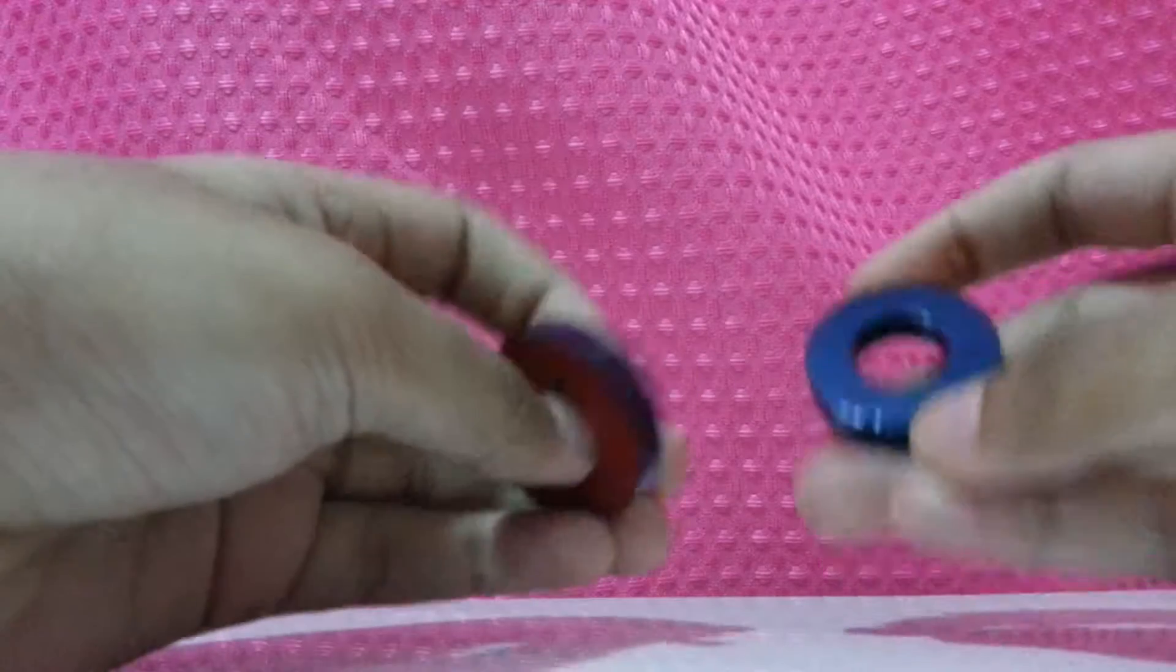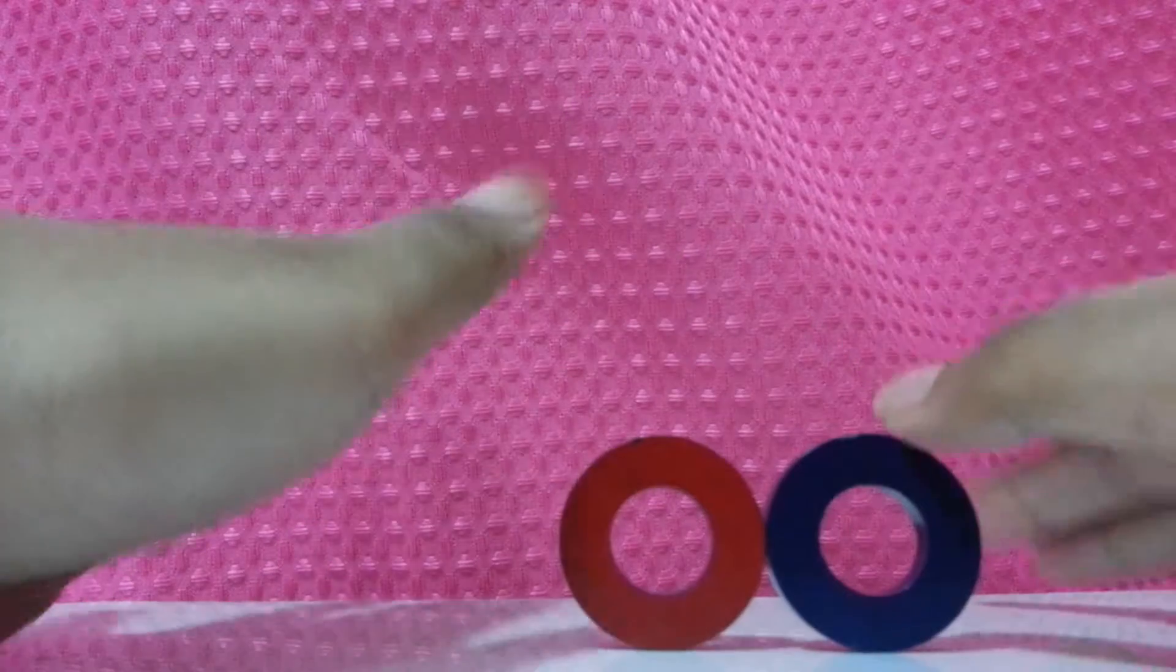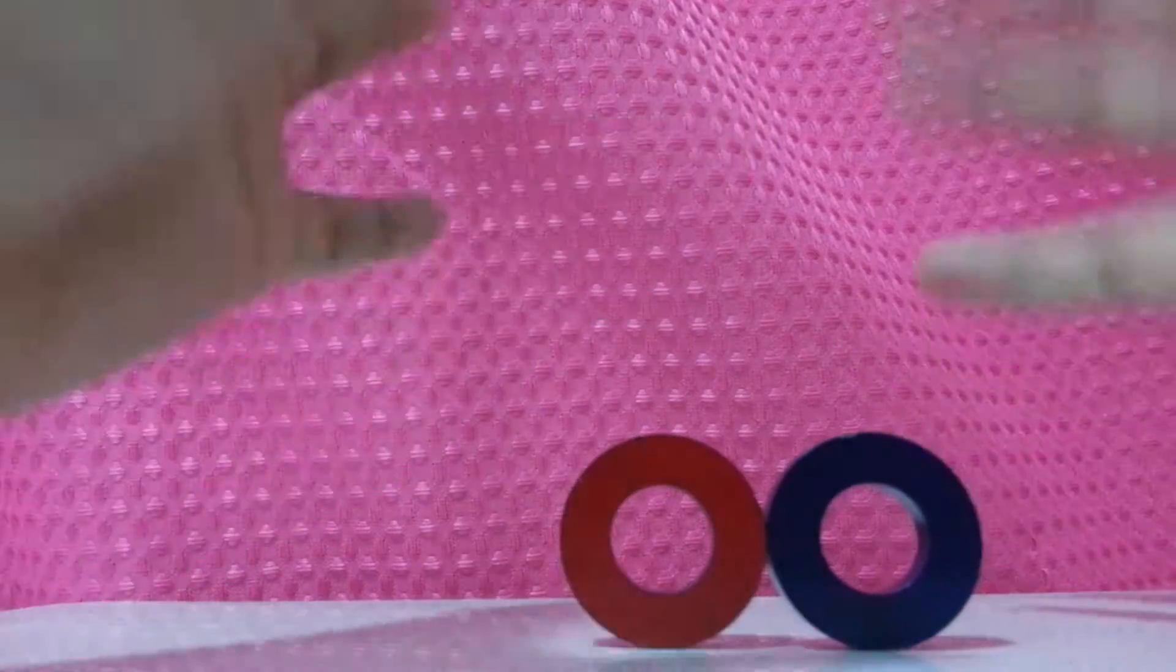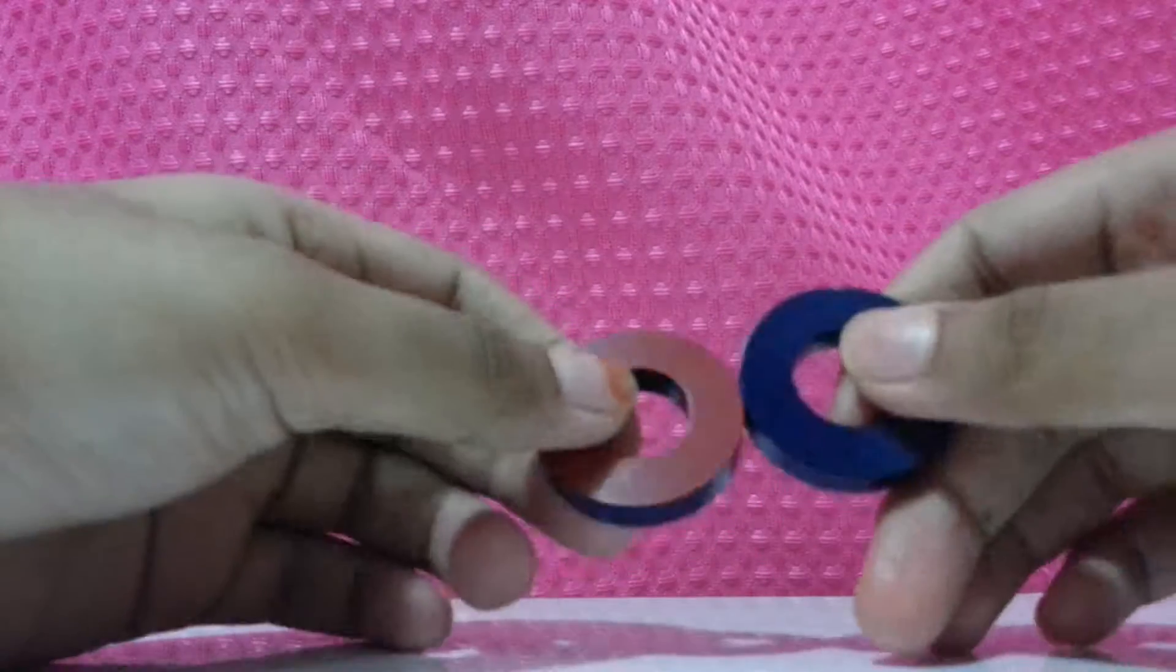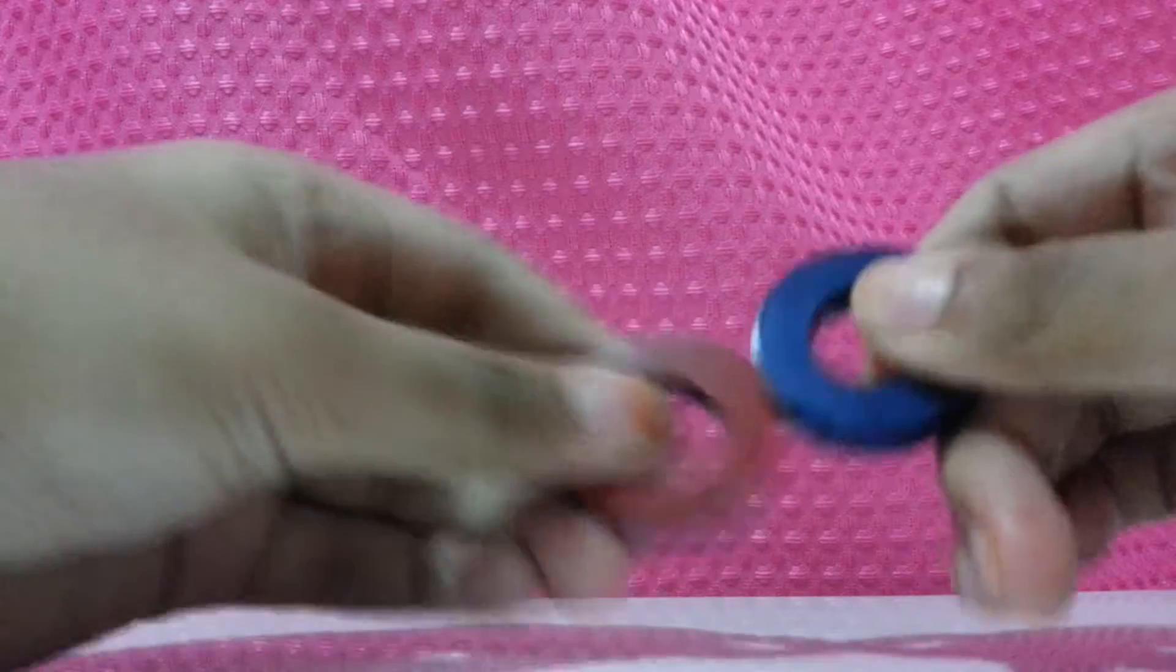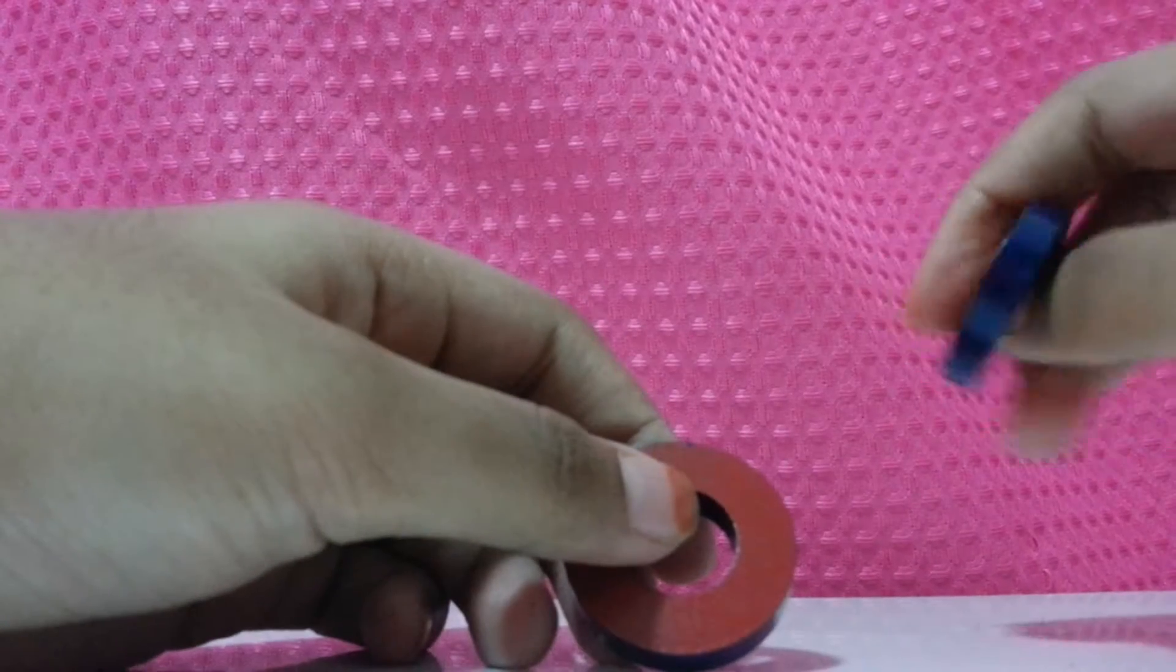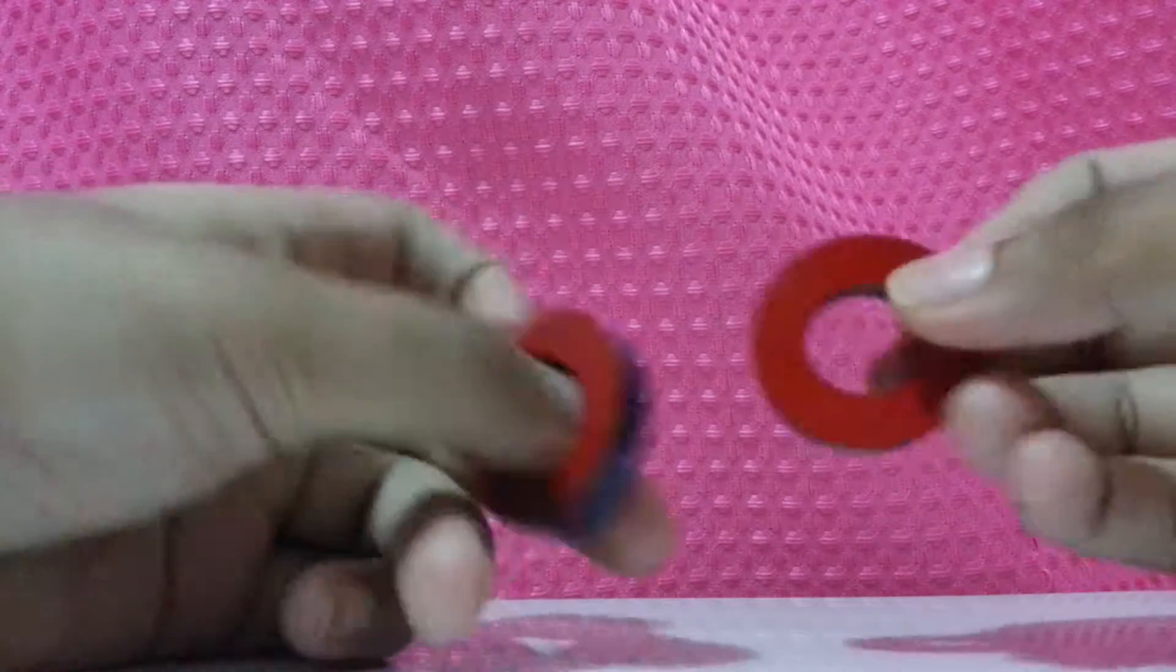You just rub them. And then even this becomes a magnet. Remember whenever you want to make a metal into a magnet, you should use two metals. One should be a magnet and one should be an ordinary one. You rub. The metal will get the magnetism properties.